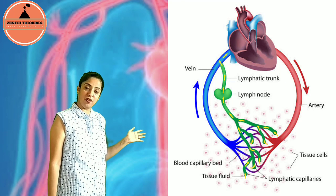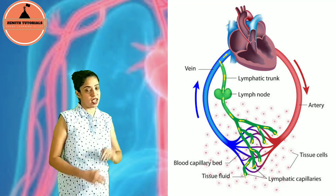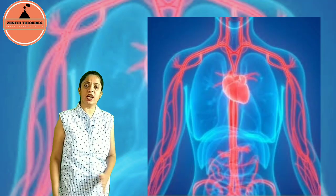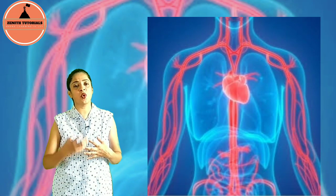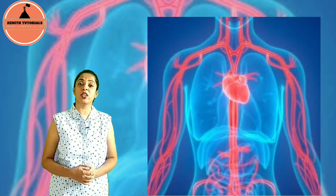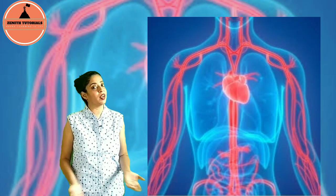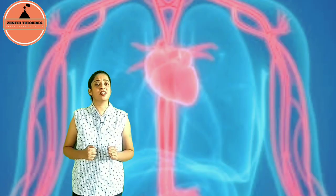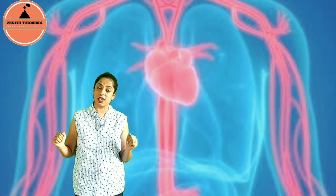Watch the diagram carefully and if possible pause the video and draw it. From the diagram it is clear that blood flows in closed vessels — whenever blood flows in closed vessels to and from the heart and different organs, that type of circulation is called closed circulation, and the system is called the closed blood circulatory system. In contrast, in many animals like insects the blood flows through open spaces, which is called an open blood circulatory system.